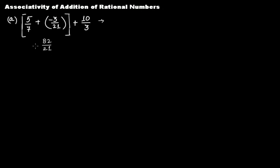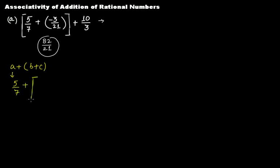Now I'm going to perform the second form, A + (B + C). Here A is 5/7, B is -3/21, and C is 10/3. So we write 5/7 plus, within square brackets, minus 3/21 plus 10/3. We use square brackets because we already have a small bracket for minus 3/21.